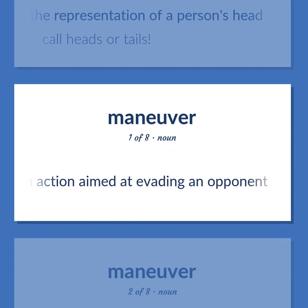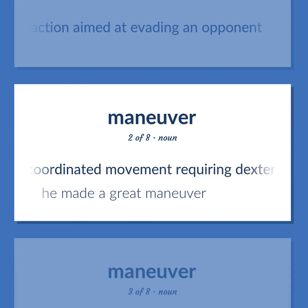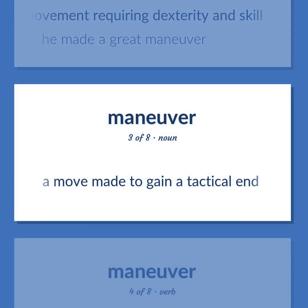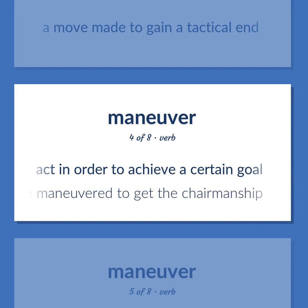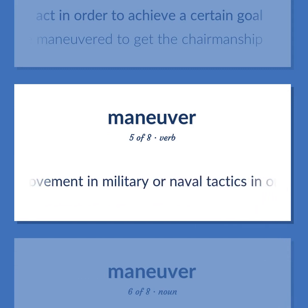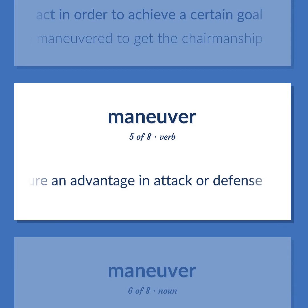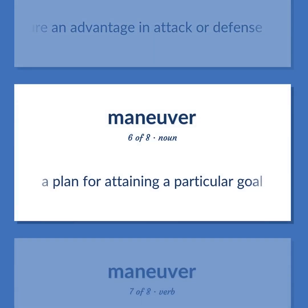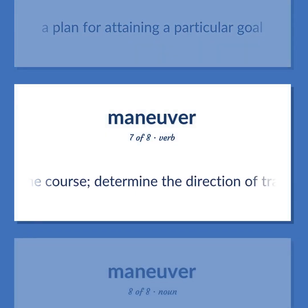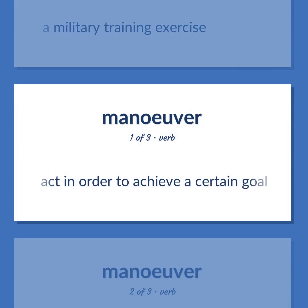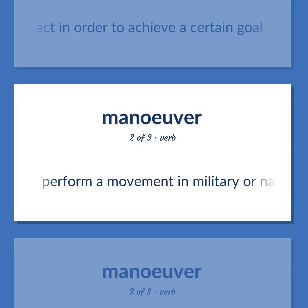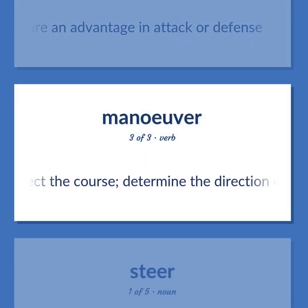An action aimed at evading an opponent. A deliberate coordinated movement requiring dexterity and skill. He made a great maneuver. A move made to gain a tactical end. Act in order to achieve a certain goal. He maneuvered to get the chairmanship. Perform a movement in military or naval tactics in order to secure an advantage in attack or defense. A plan for attaining a particular goal. Direct the course; determine the direction of traveling. A military training exercise. Act in order to achieve a certain goal. Perform a movement in military or naval tactics in order to secure an advantage in attack or defense.